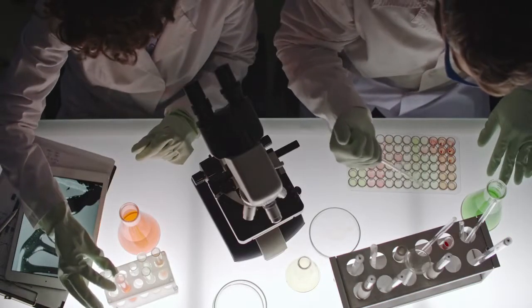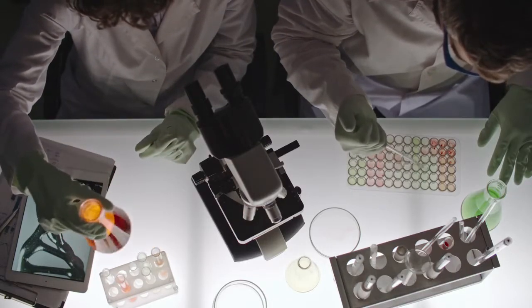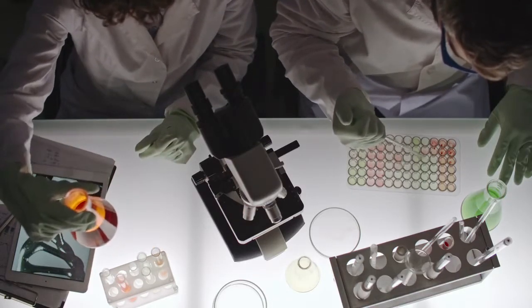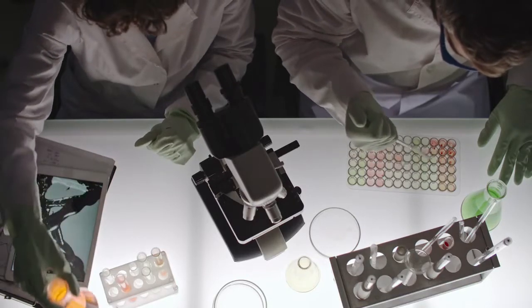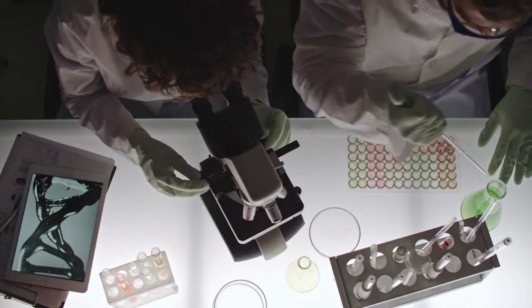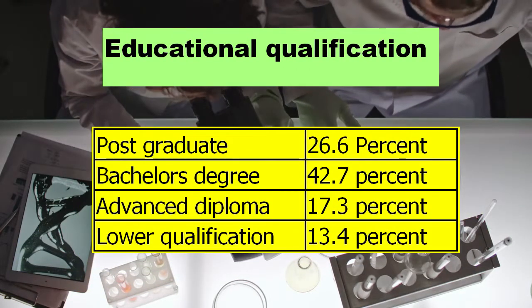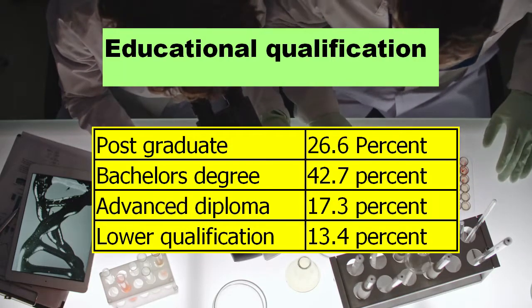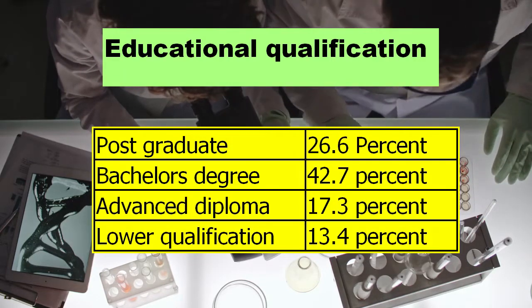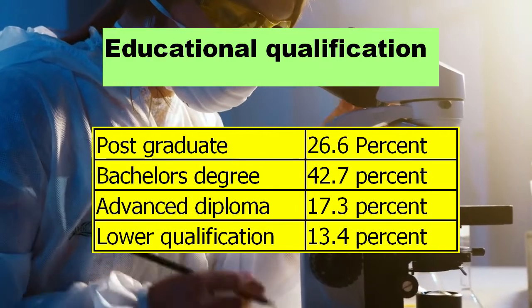One of the most important factors for getting employed is your educational qualification. The percentage of Biomedical Engineers employed in Australia who had done postgraduate studies is 26.6%, while 42.7% have a bachelor degree. The percentage of Biomedical Engineers with an advanced diploma is 17.3%, while the rest have lower qualifications.